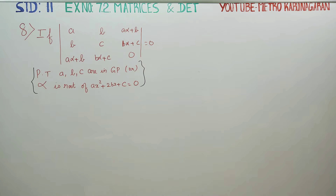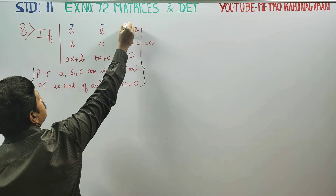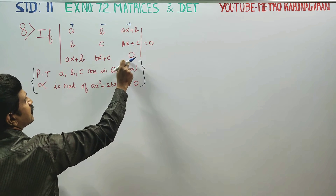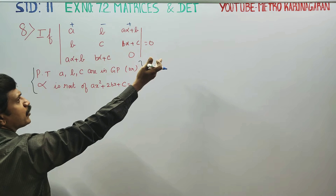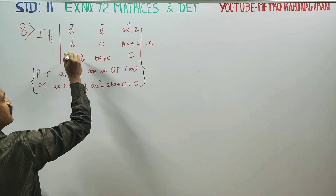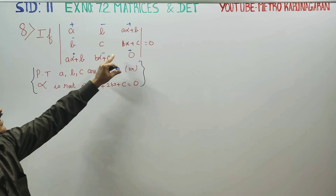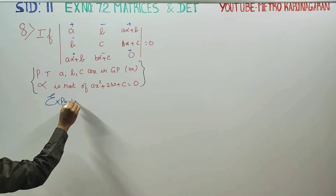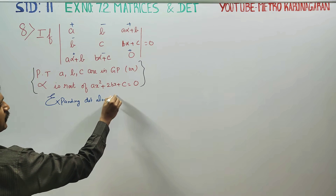First, in the determinant, the signs are plus, minus, plus. Opening R1 by 3 elements, R1 by 2 elements, R2 by 3 elements, R3 by 3 elements. Because this is the alternate sign rule. I will expand along R3.